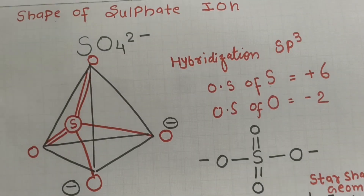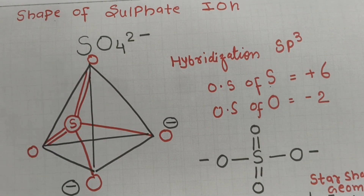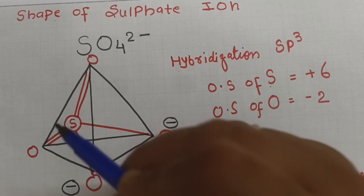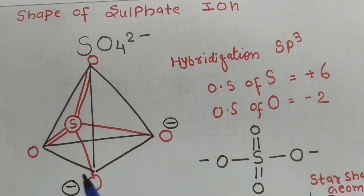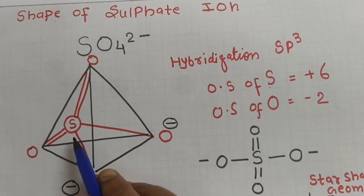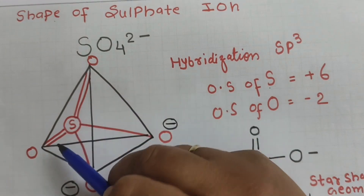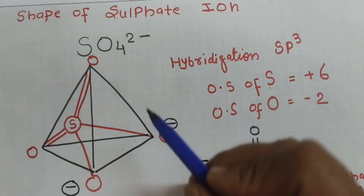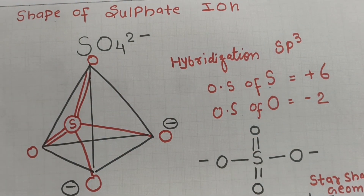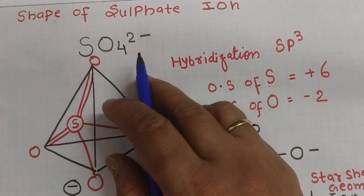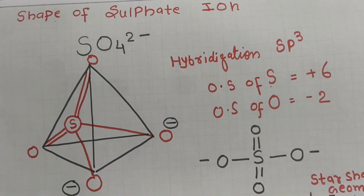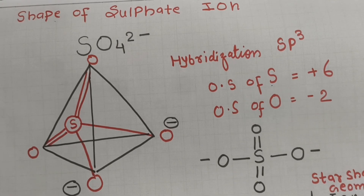Now let us see how this hybridization takes place. In the sulfate structure, there are two single bonds and two double bonds, with an overall 2- charge on the ion.